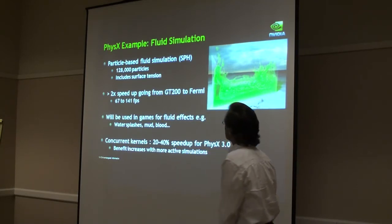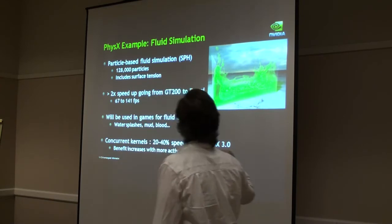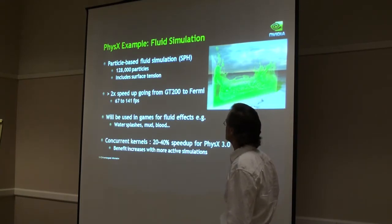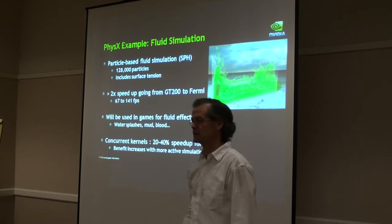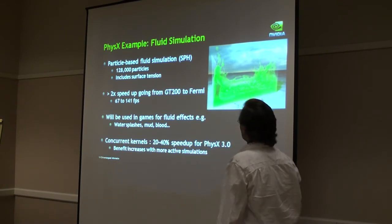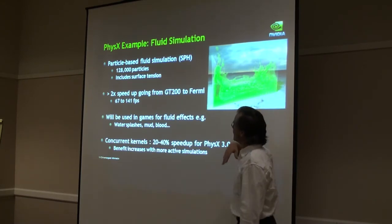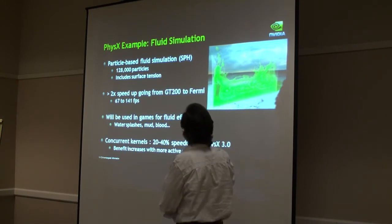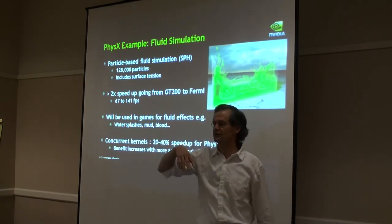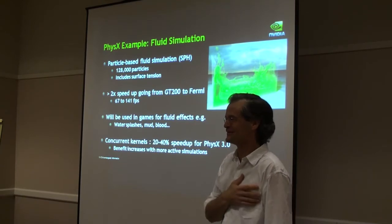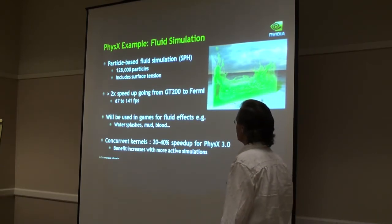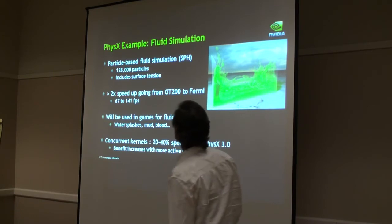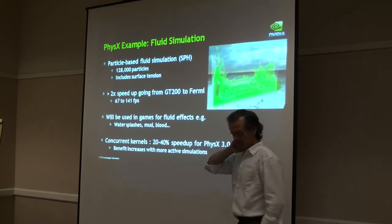Here's an example put together using the physics toolkit I mentioned earlier. This is a very realistic fluid simulation - I was going to say water, but it doesn't really look like water, more like lime jello or something. It models very large numbers of particles and surface tension. In terms of performance increases, this is GF-100, which is our internal name for Fermi, and we get a big speed-up in terms of the architectural improvements on this particular compute workload.